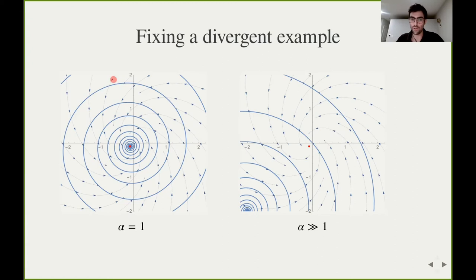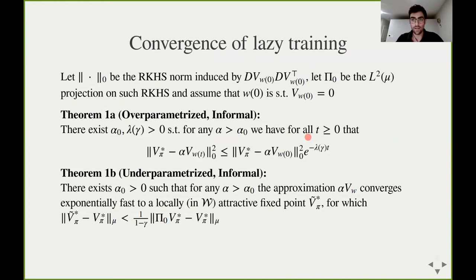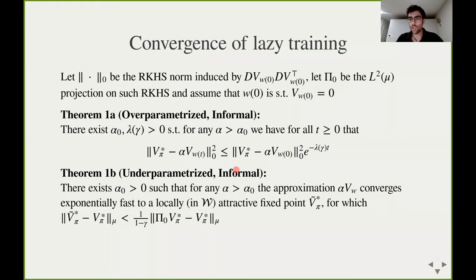This destroys one of the two reasons the previous situation was unstable and results in a stable model for which temporal difference learning will converge — as we can see in this picture, there is no more divergence and the model converges to a fixed point. More quantitatively, denoting the norm on the limiting reproducing kernel Hilbert space by the tangent model at initialization, and by pi-zero the projection in L2-mu onto that kernel, we have two results. The first is in the over-parameterized regime, when this kernel is non-degenerate — possible only when we have sufficiently many parameters, more than the size of the state space — and in this case we have exponential convergence of the temporal difference learning dynamics towards the global optimum, the actual value function.